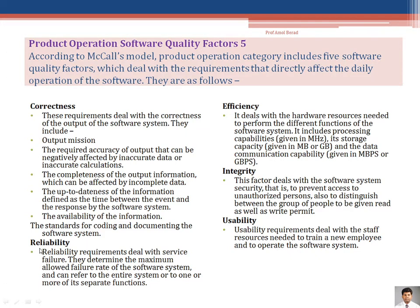The second factor in Product Operation is Reliability. Reliability requirements deal with service failure — if a website is not working or under maintenance, it becomes hectic for the user. Your software should be readily available as soon as the user wants to interact with the system, whether it is a Windows or web application. Reliability depends on product quality and commitment to the customer. If you fail to provide the service on time, the reliability of that product will be reduced and customer flow will automatically decrease.